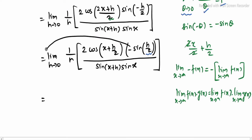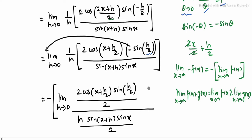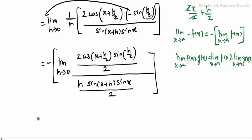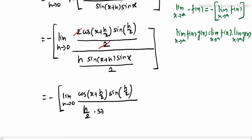So minus of limit h tending to 0: 2 times of cos of (2x plus h) divided by 2, into sin of h by 2, numerator lhe first 2 ala divide pannanla, whole divided by h into sin of x plus h into sin x. Denominator in 2 divide, so: minus of limit h tending to 0 — 2 2 cut ayidum — cos of x plus h by 2, into sin of h by 2, whole divided by h by 2 into sin of x plus h into sin x.